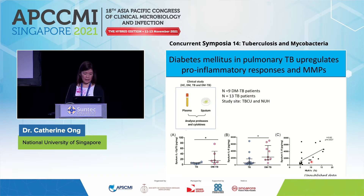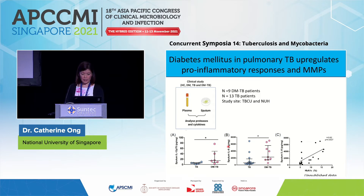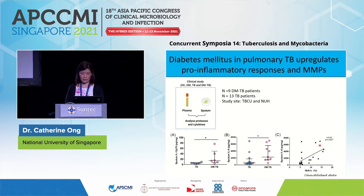From her clinical cohort of 9 diabetic TB patients and 13 TB-only patients, she found that diabetic TB patients have increased sputum IL-12 and IL-8, which is a neutrophil chemoattractant. Increased sputum IL-8 strongly correlates with HbA1c, an indicator of how well controlled the diabetes is. The worse the diabetic control, the higher the sputum IL-8 — which is perhaps one reason we see a worse immunophenotype in TB patients with diabetes.